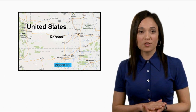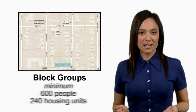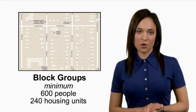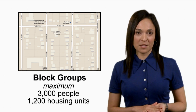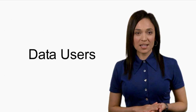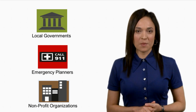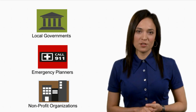Block groups are the lowest level of geography published in the ACS. They contain a minimum of 600 people or 240 housing units and a maximum of 3,000 people or 1,200 housing units. Many kinds of data users, including local governments, emergency planners, and non-profit organizations, use block group estimates from the ACS to help determine community needs.